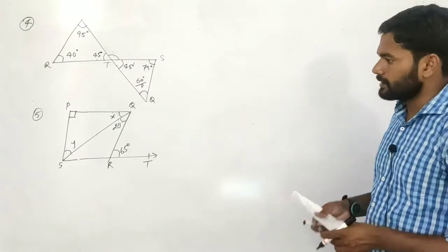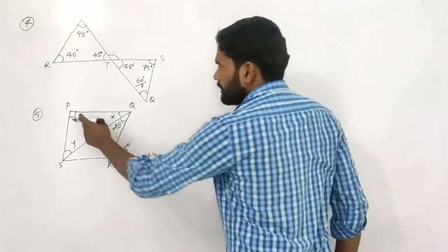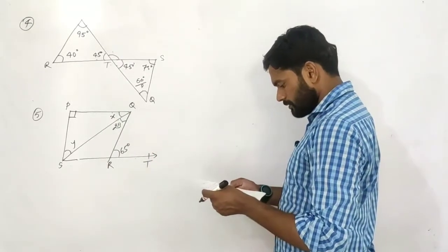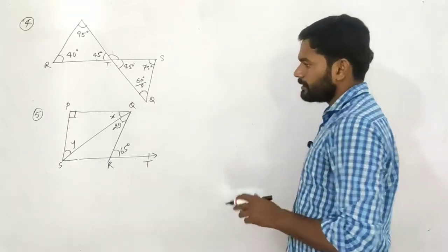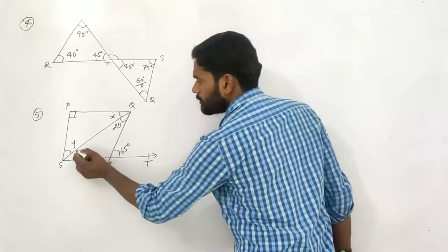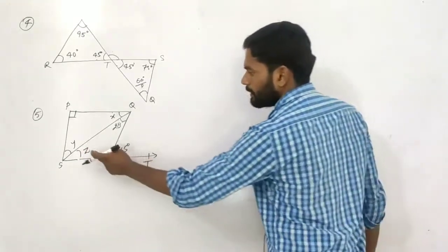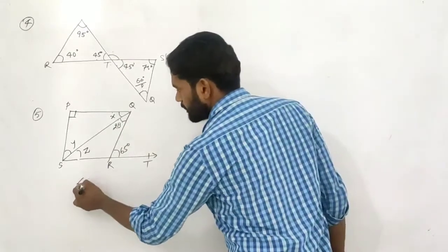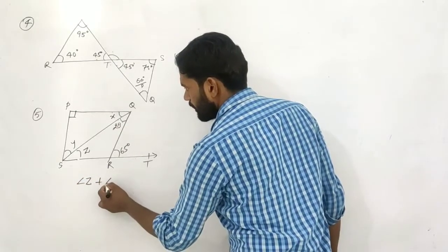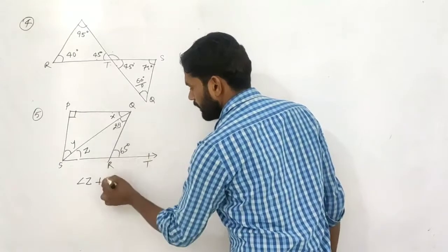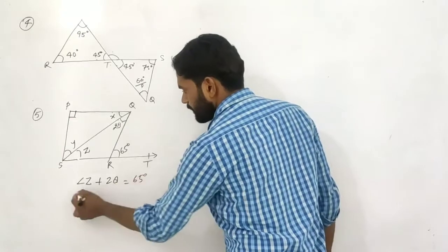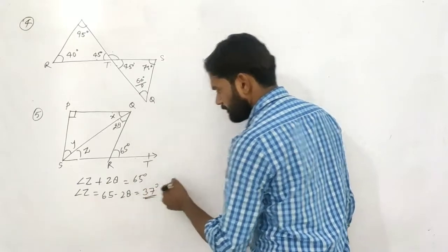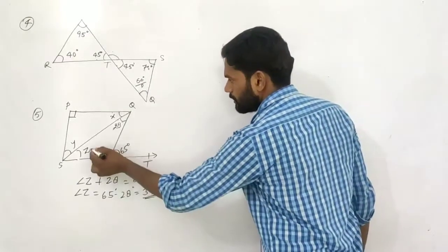We need to find out. Consider this triangle. In triangle SQR, angle S plus angle Q which is 28 degrees equals 65 degrees. Then angle S equals 65 minus 28 equals 37 degrees.